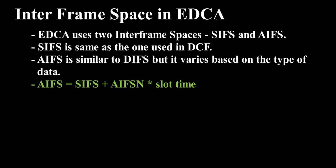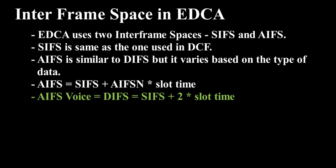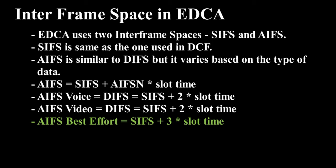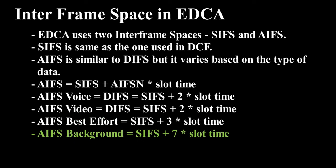Arbitration Interframe Space equals Short Interframe Space plus the AIFS number multiplied by slot time. AIFS for voice equals DCF interframe space equals Short Interframe Space plus 2 multiplied by slot time. AIFS for best effort equals Short Interframe Space plus 3 multiplied by slot time. AIFS for background equals Short Interframe Space plus 7 multiplied by slot time.